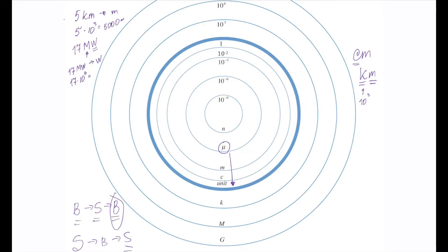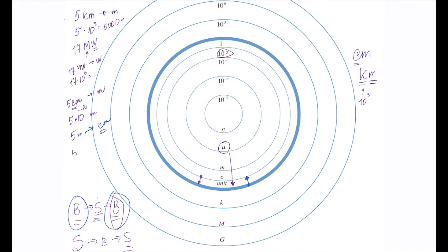Let's practice. Converting 5 centimeters to meters: I'm going from small to big, so my power of 10 will be negative. The prefix centi stands for 10 to the negative 2, so 5 centimeters equals 5 times 10 to the negative 2 meters. However, if I'm going from 5 meters to centimeters — going big to small — then my power of 10 will be positive: 5 times 10 to the second equals 500 centimeters. So 5 meters is 500 centimeters, while 5 centimeters equals 0.05 meters.